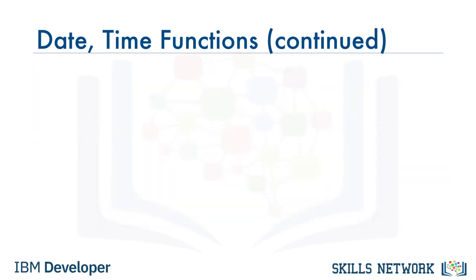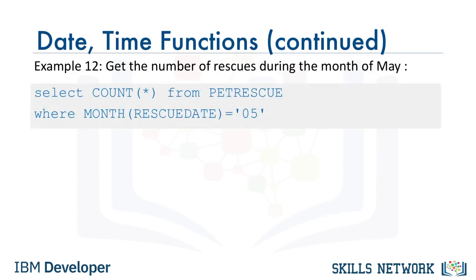Date and time functions can be used in the WHERE clause. For example, to get the number of rescues during the month of May, that is for month 5, select count star from pet rescue where month rescue date equals 05.